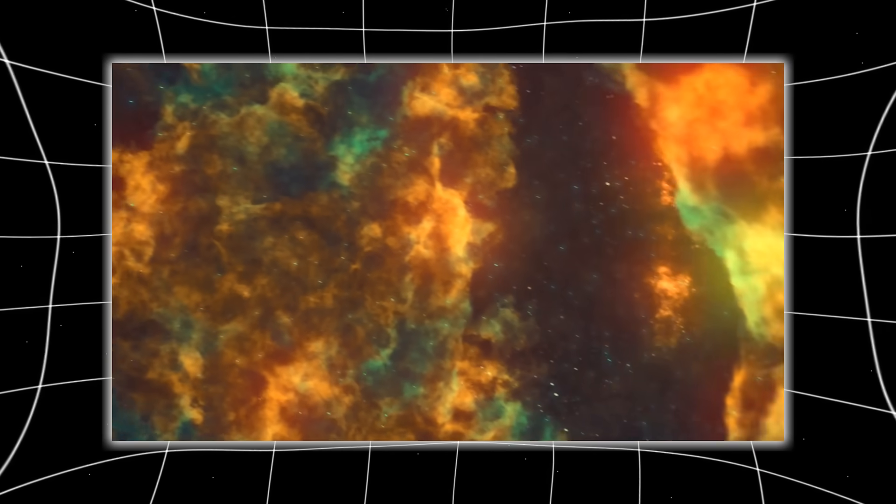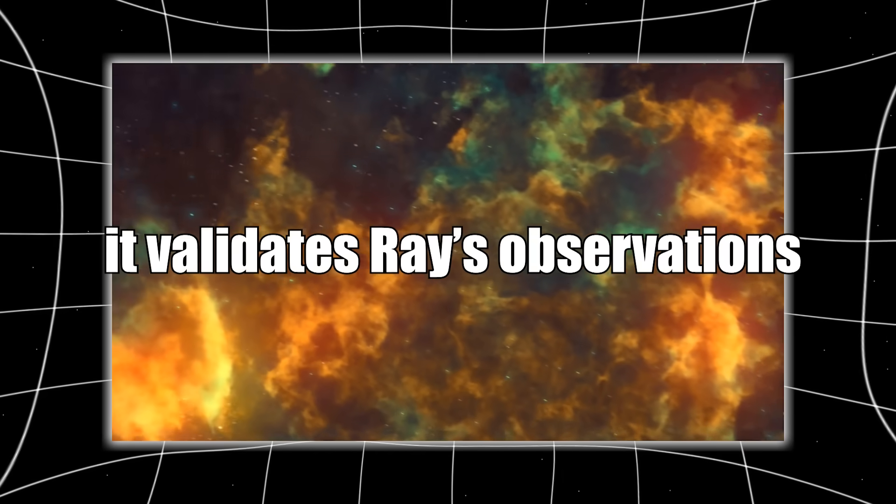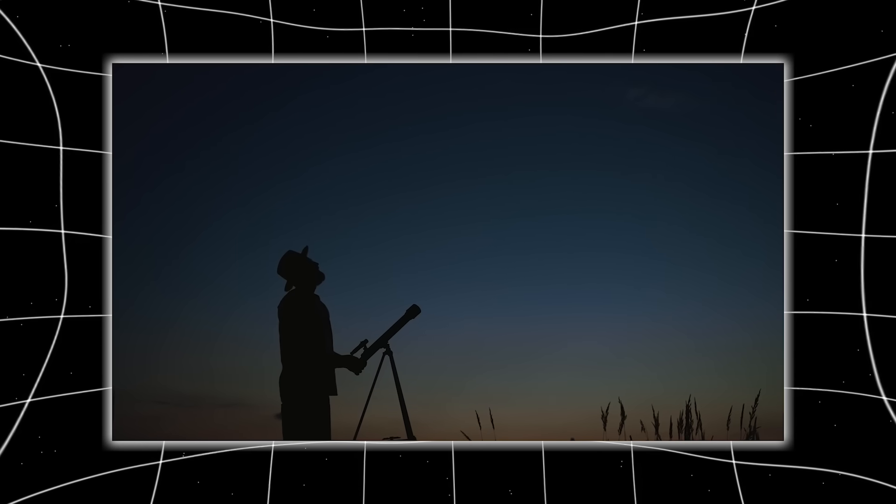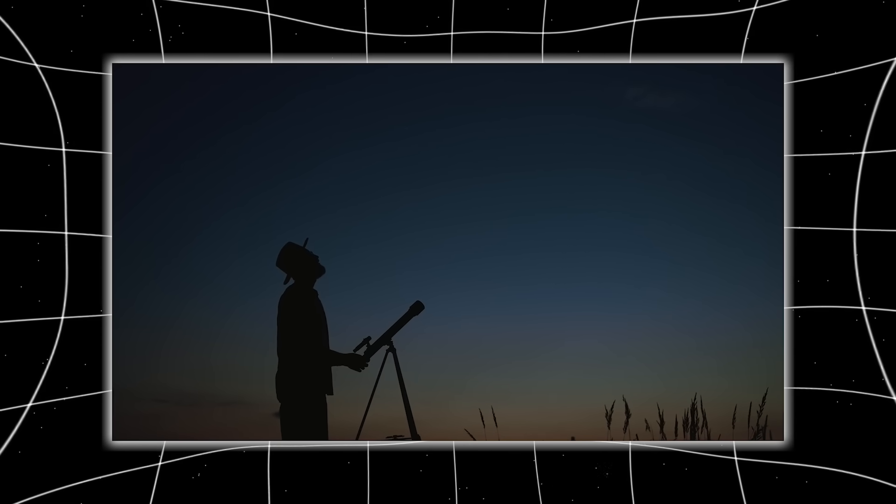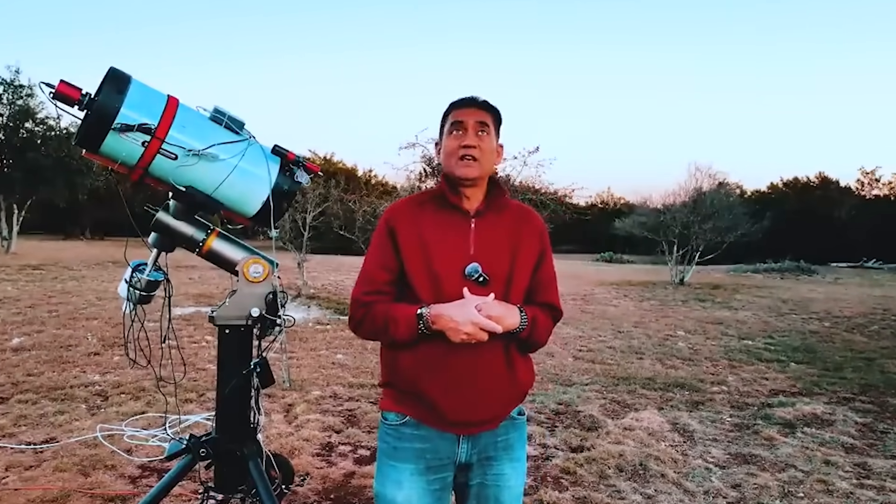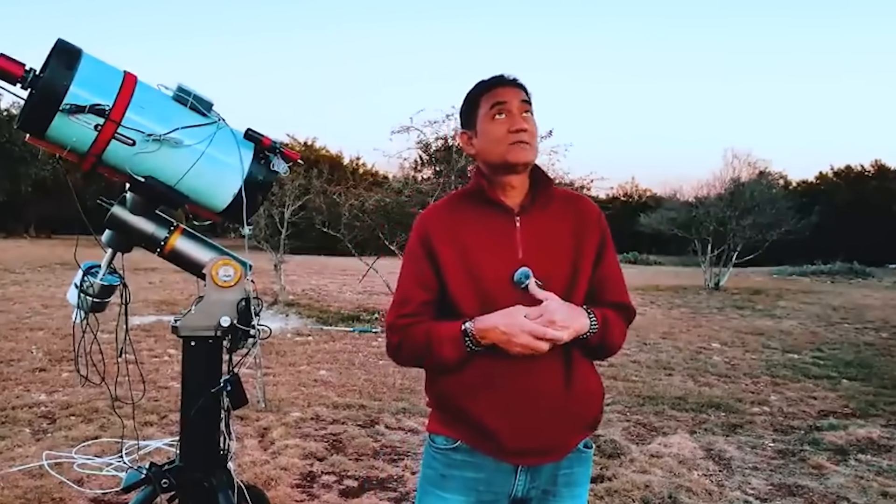Ray compares his processed images with archived Hubble data, and the pointed structure appears in both. This is remarkable for several reasons. It validates Ray's observations, supports Hubble's original detections, and demonstrates that independent observers with modest telescopes can meaningfully contribute to frontier science. Ray's work is not guesswork. It's data.